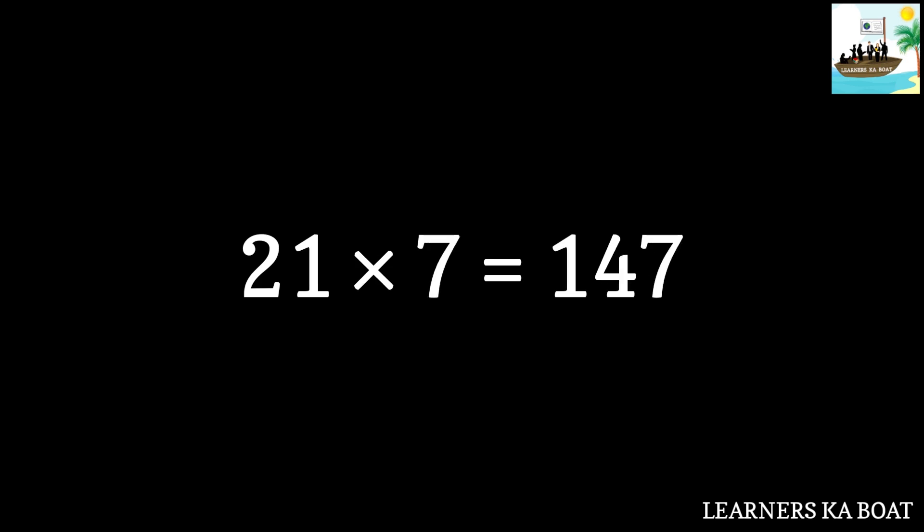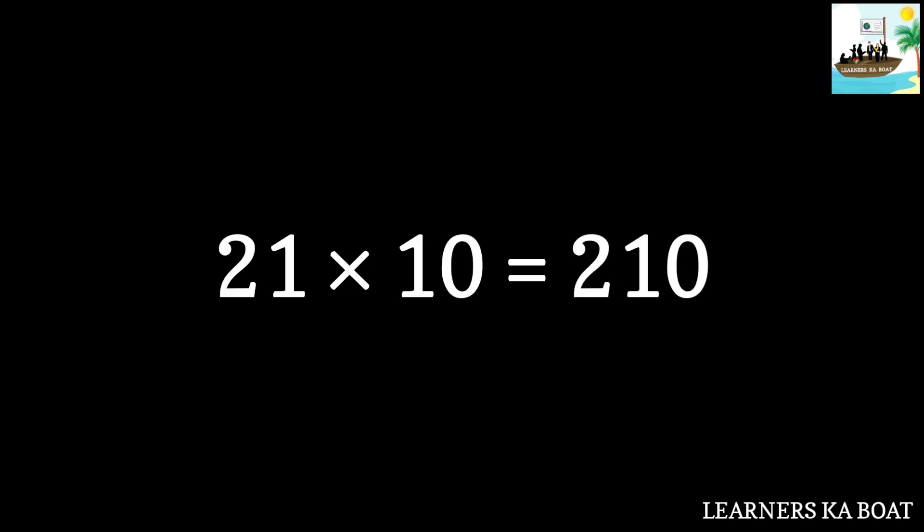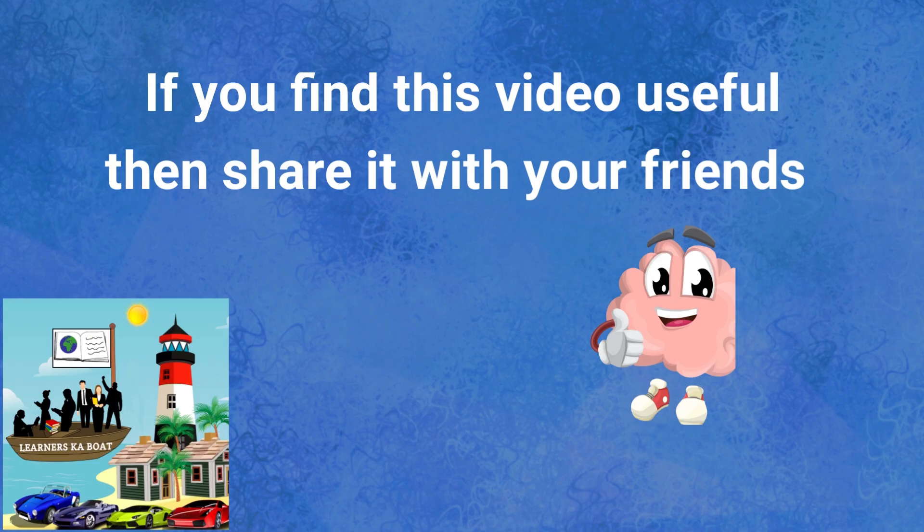21 sevens are 147. 21 eights are 168. 21 nines are 189. 21 tens are 210.